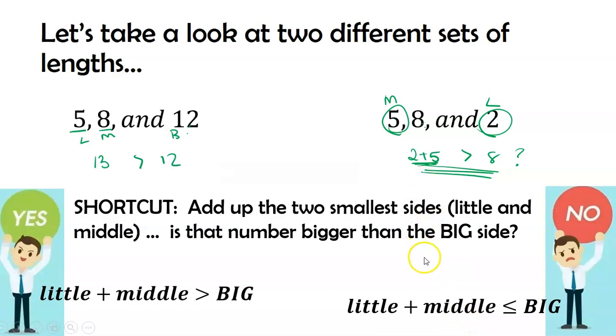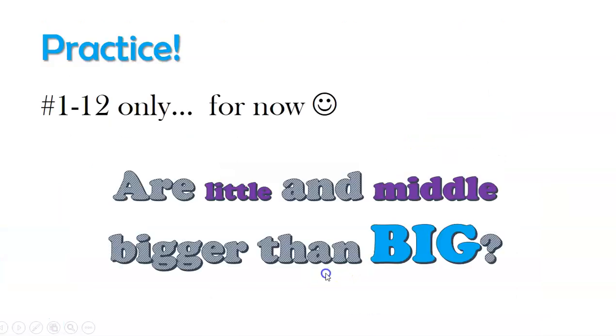So can you check all three combinations? Heck yeah. Should you probably check all three combinations? Probably. I would want to. But if you're the kind of person who doesn't like to do lots of stuff, pencil conservationist I like to say, you could just check the little sides, little and middle. Are they bigger than big? If they are, you're good to go.